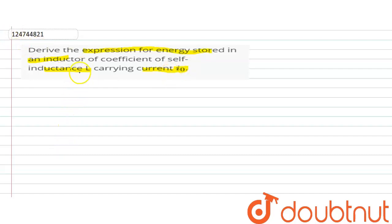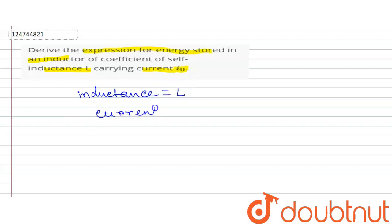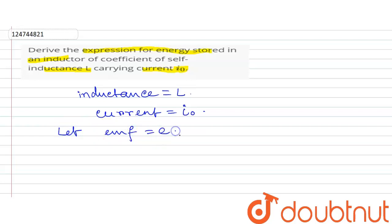The inductance is now L. Inductance is equal to L. What does current mean? Current is equal to I0. Let EMF be equal to E.